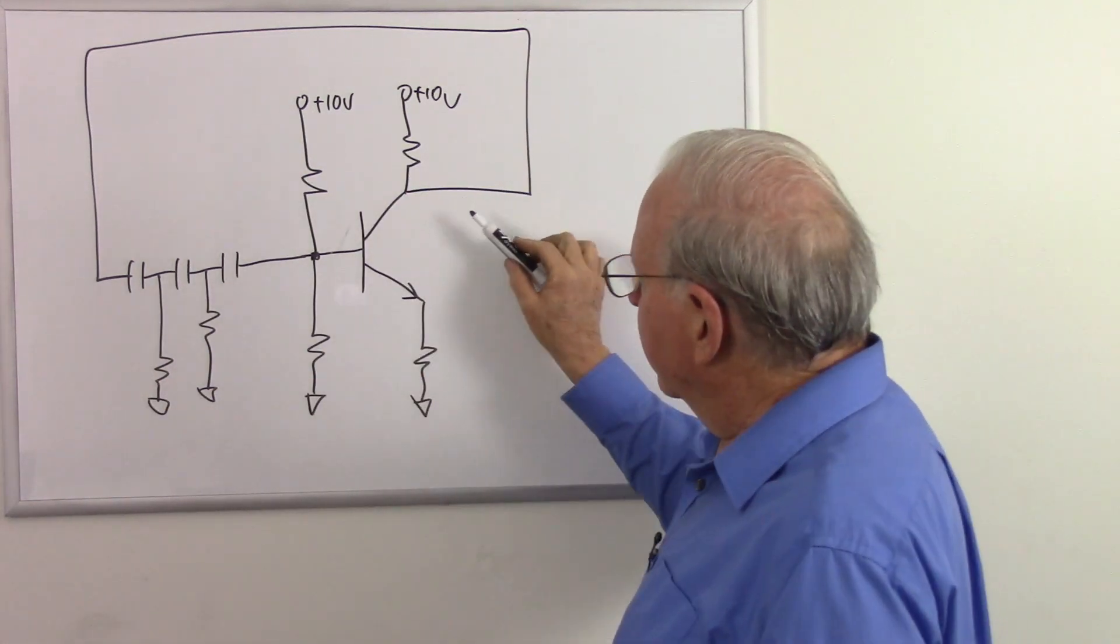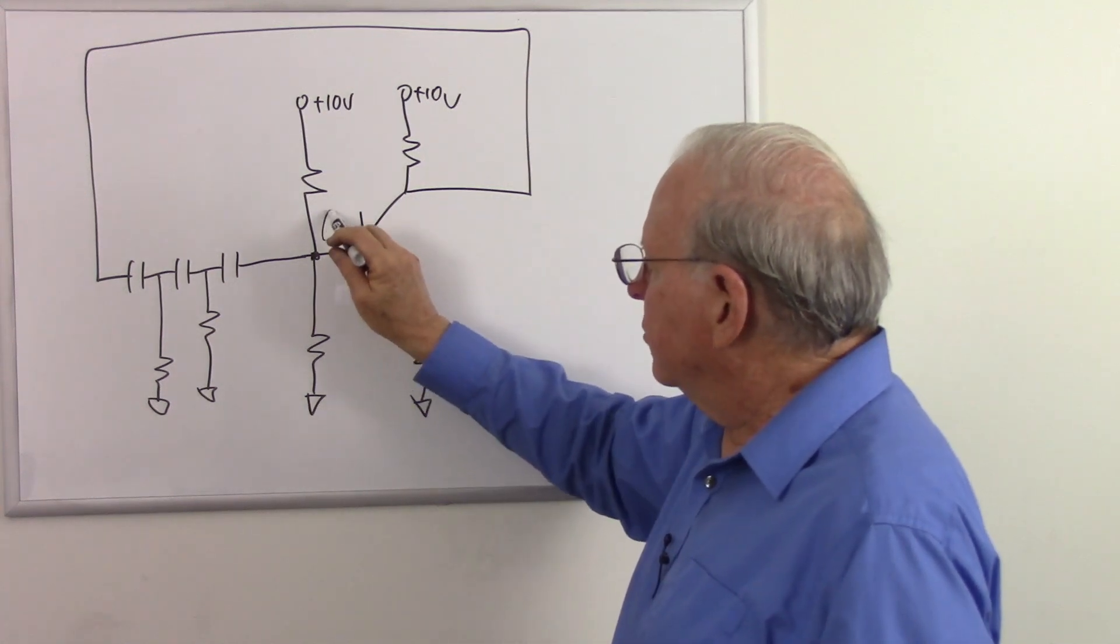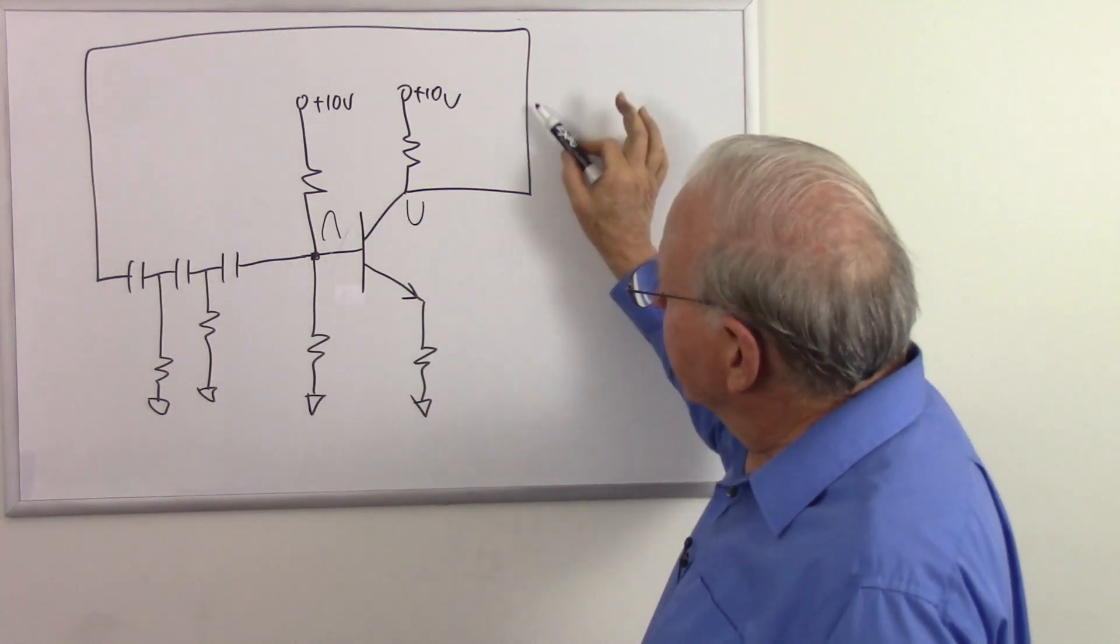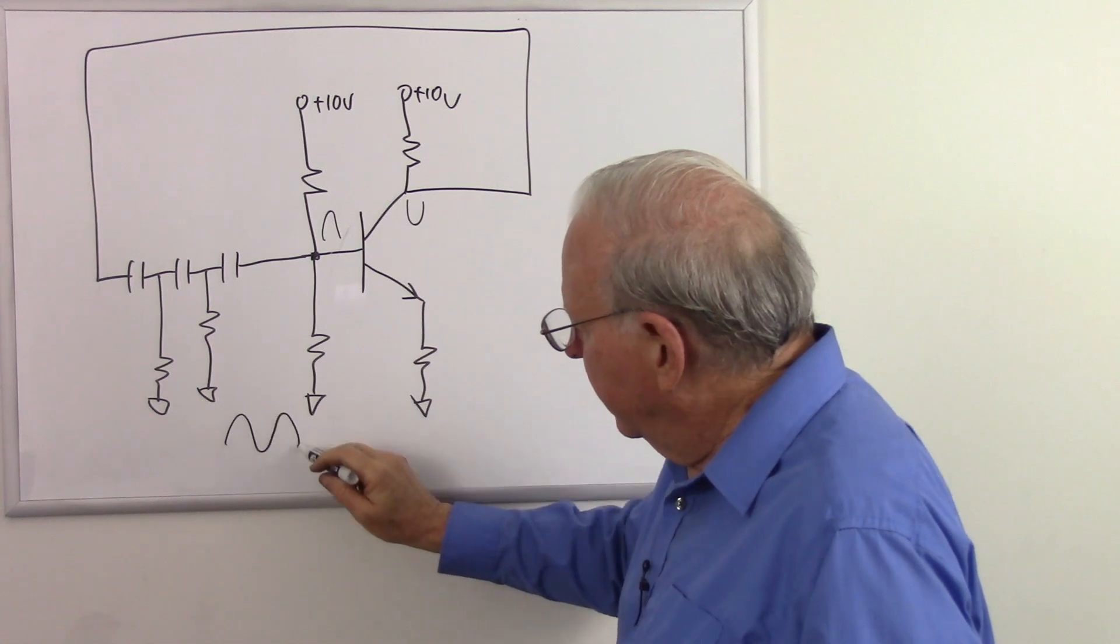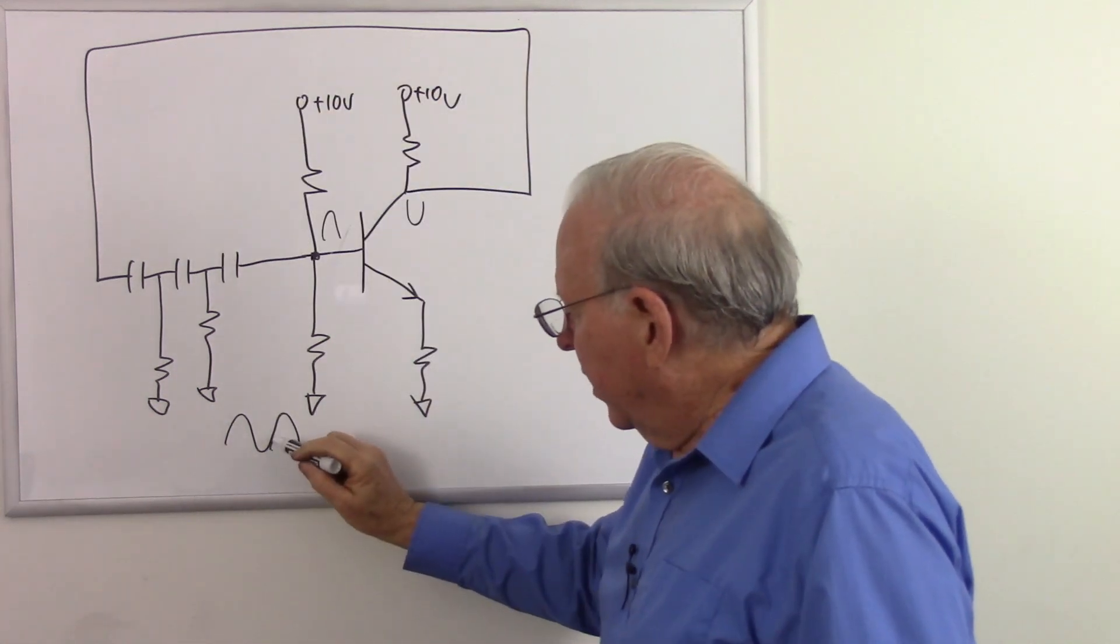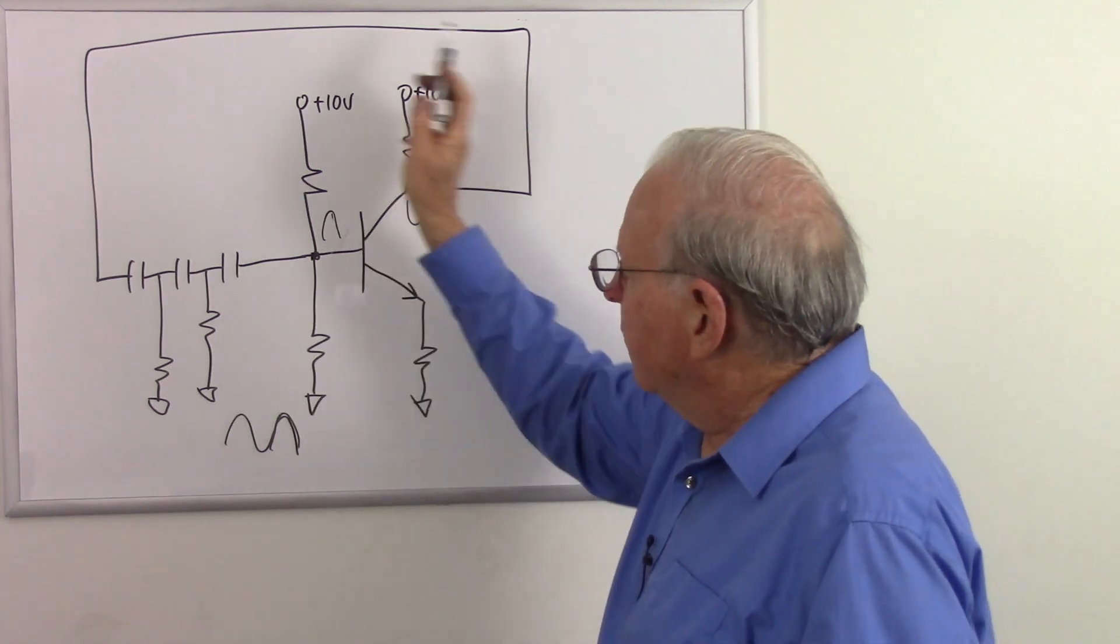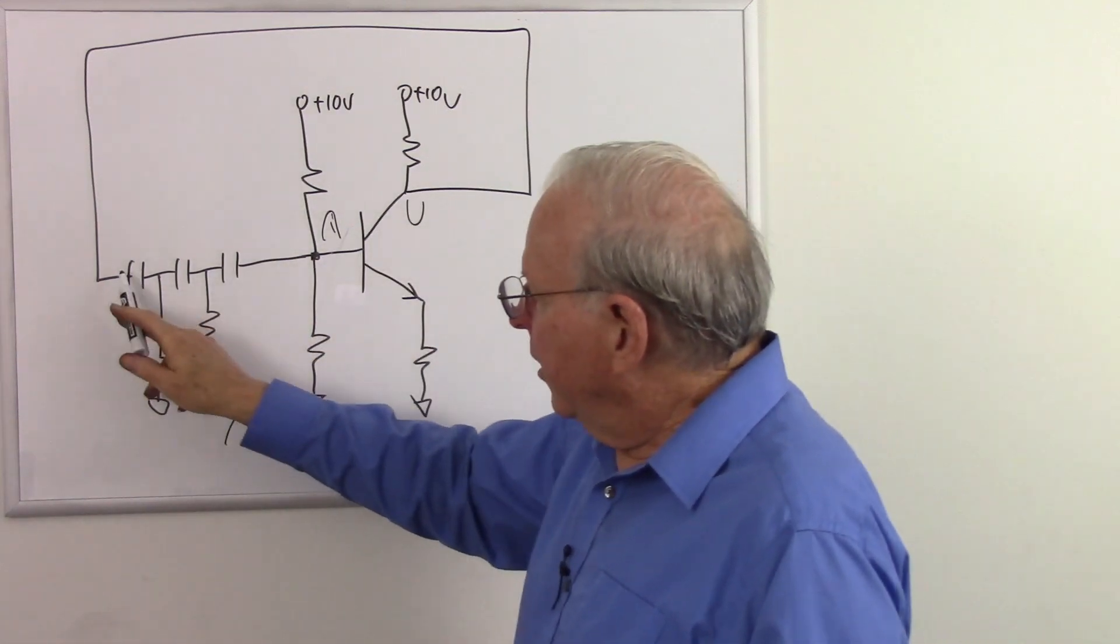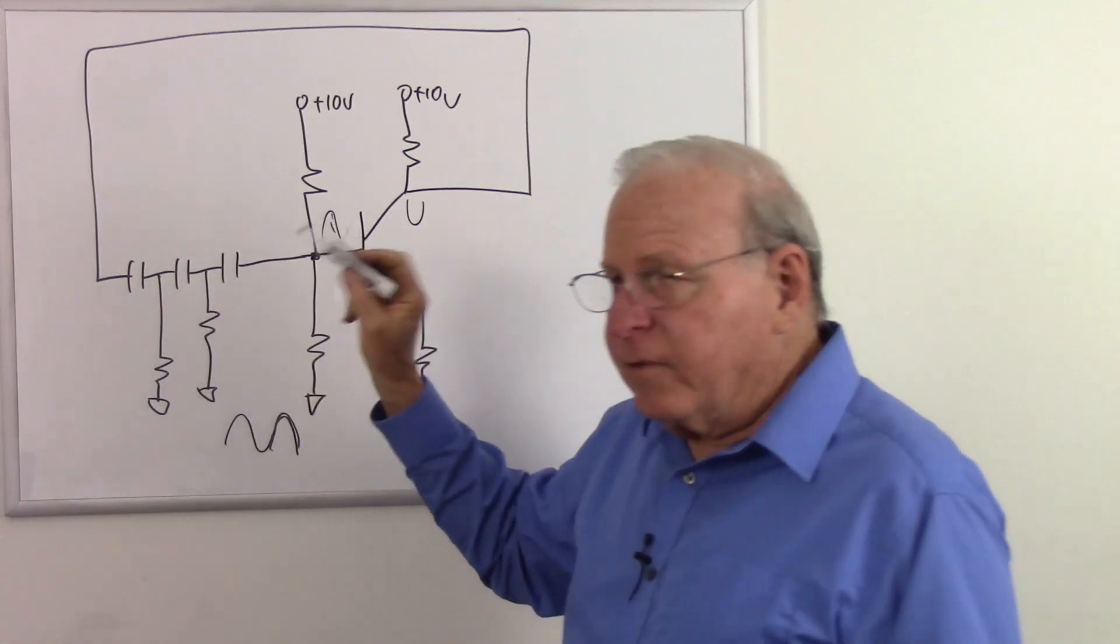Remember the phase shift oscillator works because we are sending in negative feedback, because as the base voltage goes up, the collector voltage goes down. But we're going to delay it so that when our next cycle comes along, by that time this signal gets to the base, it is in line with that. So as this is trying to go up, our feedback is pushing it up and gives a little more energy into it.